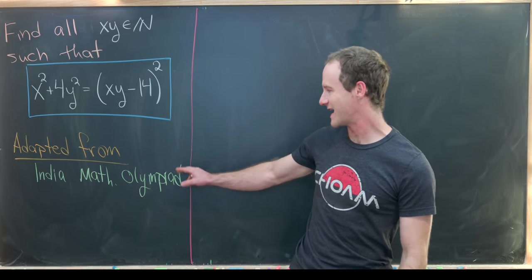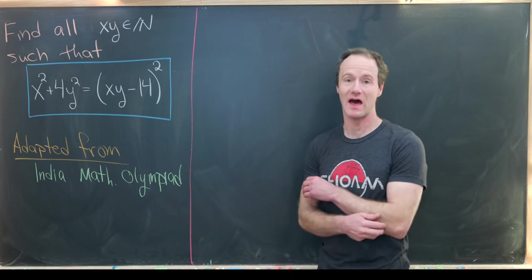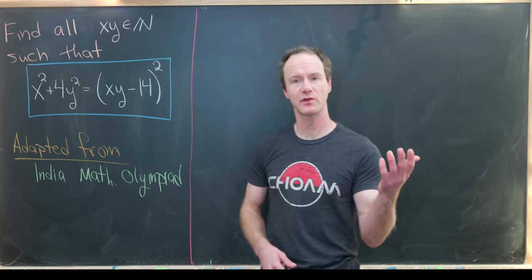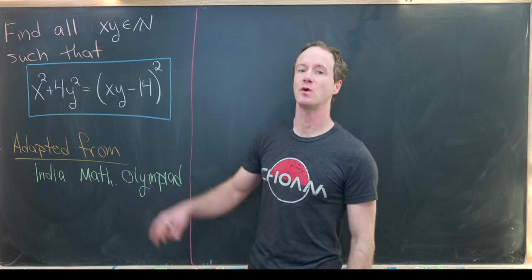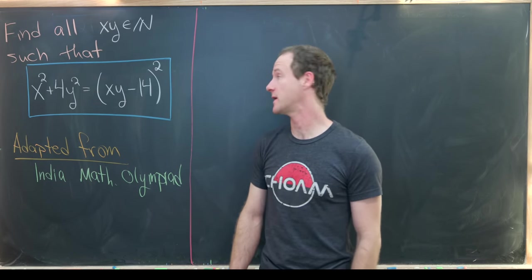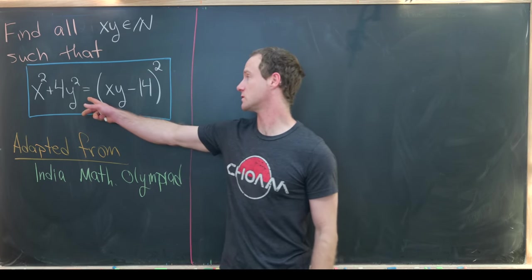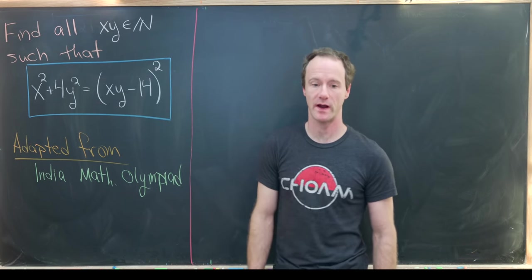Here I've got a nice problem which I have adapted from an old problem on an Indian math Olympiad. Let's see what I came up with. We want to find all natural numbers x and y such that x squared plus 4y squared equals xy minus 14, quantity squared.